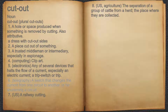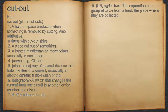6. Telegraphy, a switch that changes the current from one circuit to another, or for shortening a circuit. 7. A railway cutting. 8. Agriculture, the separation of a group of cattle from a herd, the place where they are collected.